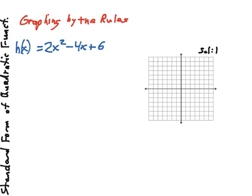My first order of business is to find my axis of symmetry, and that's x equals negative b over 2a,